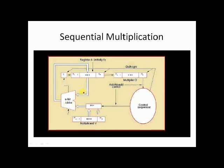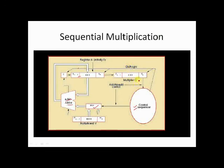Now there are certain things in the circuit: we have an adder, we have a multiplexer, we have a control sequencer, and we have a carry flag. Each register is going to hold n bits, and depending on the LSB — least significant bit — of register Q, the control sequencer will decide whether it is going to give an operation: add or no add.